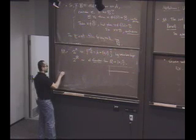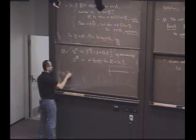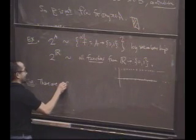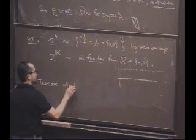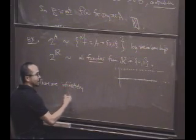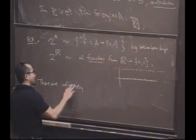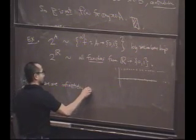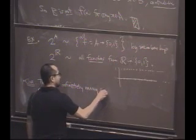Yes. So, consequence of this theorem is that there are infinitely many. In fact, it is true, uncountably many, but it actually doesn't even make sense to say how many there are. But there are infinitely many cardinalities.